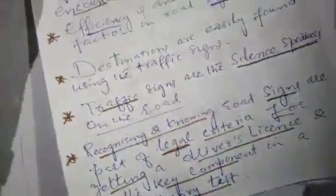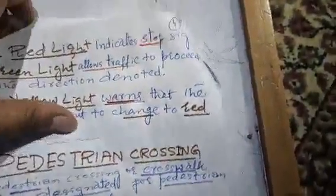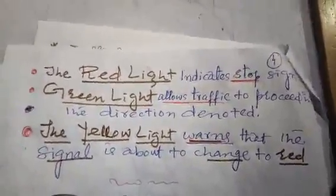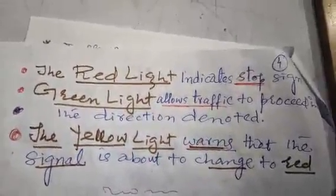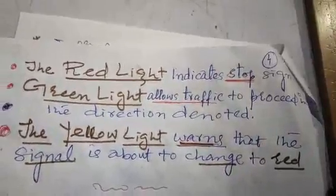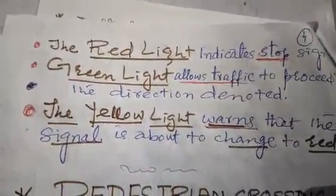The red color indicates a stop sign — when the red light is on, traffic must stop, as you will have seen at signals. The green light allows traffic to proceed in the direction denoted by the arrow — traffic moves in whichever direction the arrow points.